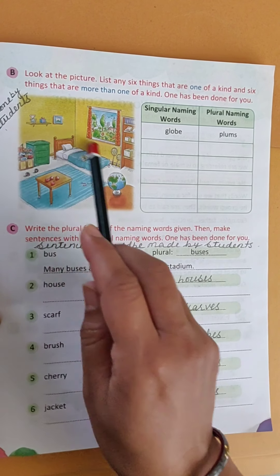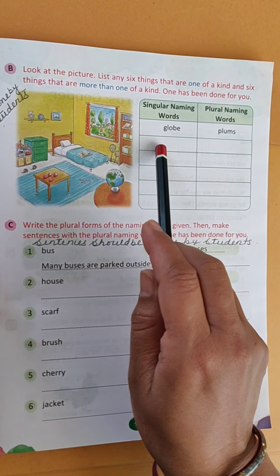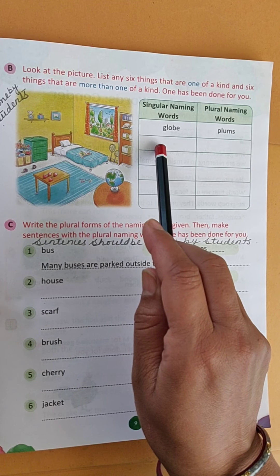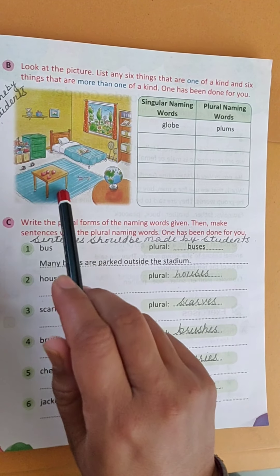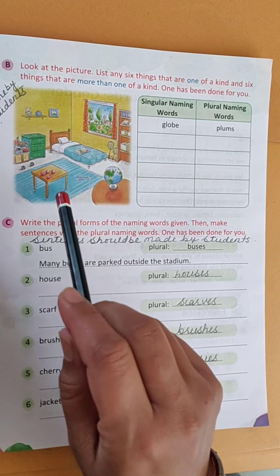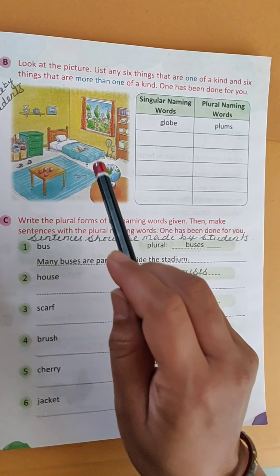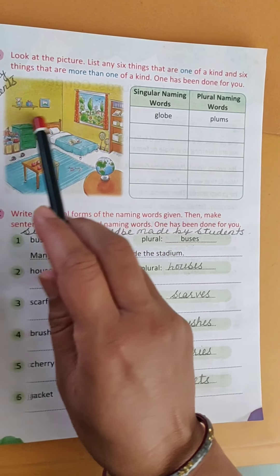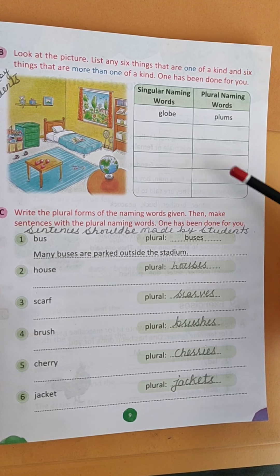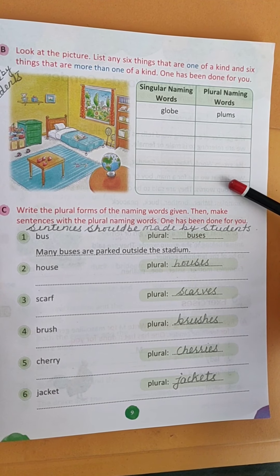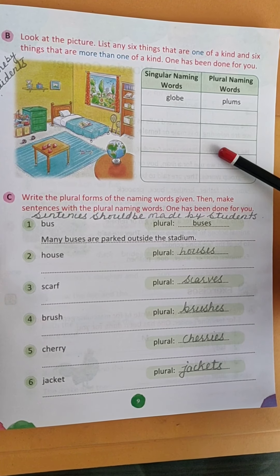What thing is one? See, one bed is there in this room, so 'bed' you have to write here. Like this you have to search which things are only single. Singular things go here, and if these things are more than one, then those things you have to write in the plural column. So you have to do it by your own. See the picture and write here.